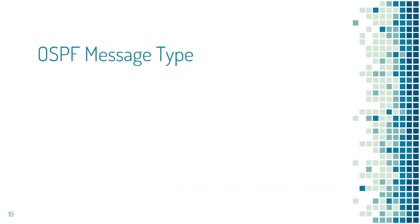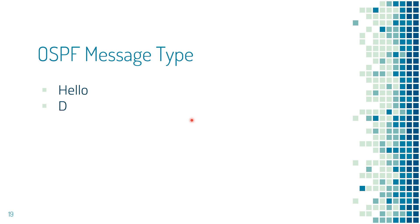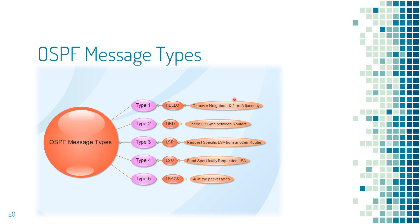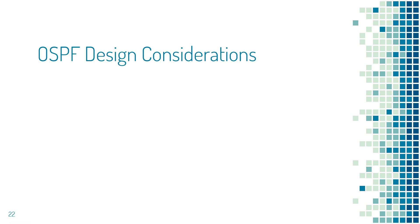In the Full state, the neighbors are fully adjacent to each other, which is the happy state in OSPF. To build OSPF adjacency, there are multiple packet types involved: Hello, DBD, LSR, LSU, and LSAck. The Hello packet uses type 1 to discover neighbors and build adjacency. The DBD packet uses type 2 to check if the OSPF database is synchronized. The LSR packet uses type 3 to request LSAs from neighbor routers. The LSU packet uses type 4 to send requested LSAs to the requester. The LSAck packet uses type 5 to acknowledge the packet types.